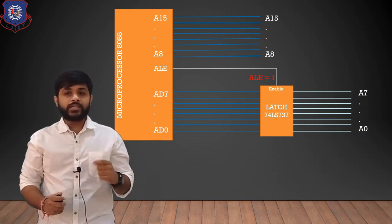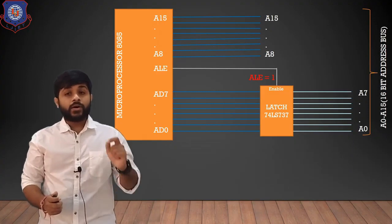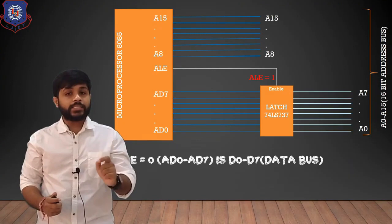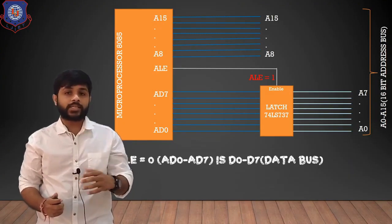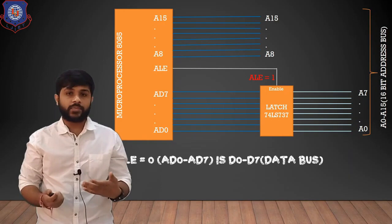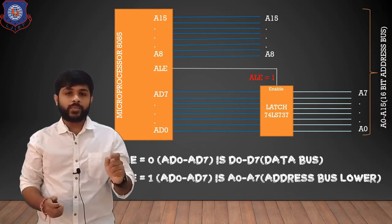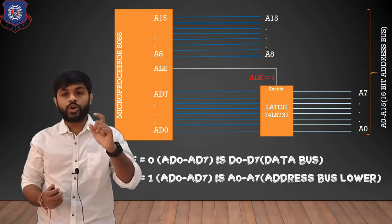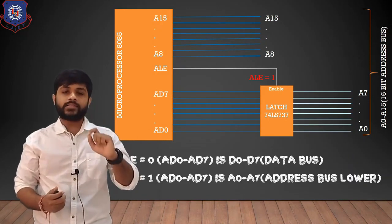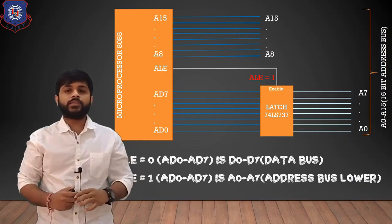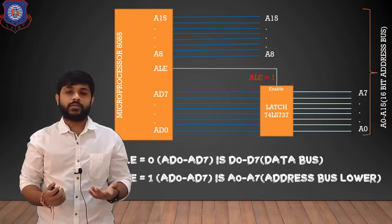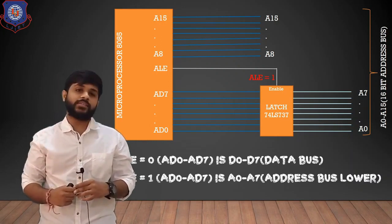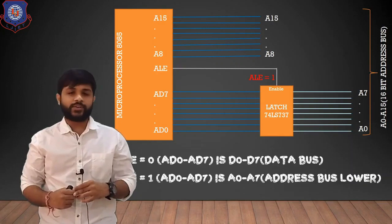So what is the takeaway? When ALE equals 0, AD0 to AD7 is D0 to D7, meaning it is a data bus and the processor will use it as a data bus. When ALE equals 1, AD0 to AD7 is A0 to A7. So the processor will consider the lower address as an address bus, and together it will become a 16-bit address. This is how demultiplexing of address and data bus is done. And this is it for this session. Thank you so much.